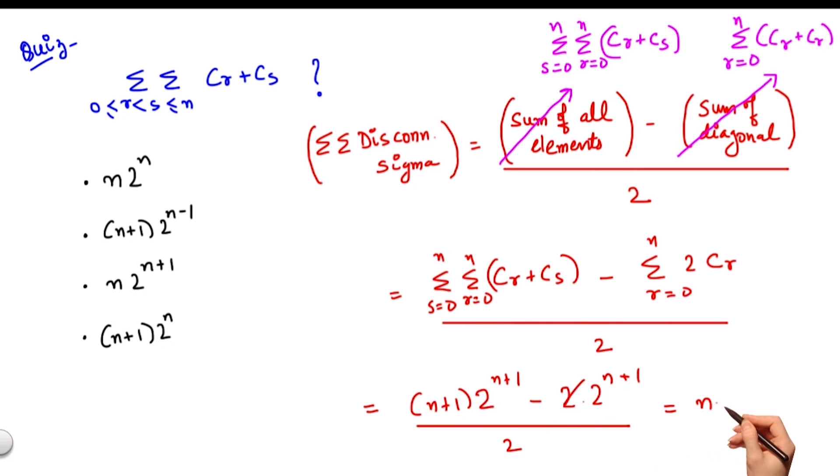Solving for this further, I get n times 2 to the power n. Hence option 1 is the correct answer.